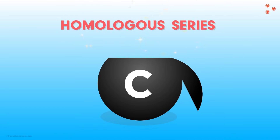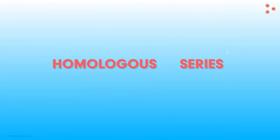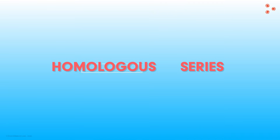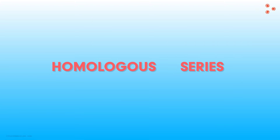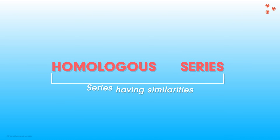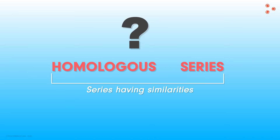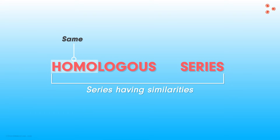Let us get to know the concept by breaking it into two parts: homologous and series. One thought we might have is that it refers to some series having similarities — and yes, absolutely. In the first part, the word 'homo' refers to same. So in the case of homologous series, we will have compounds that have something in common.